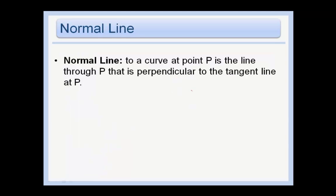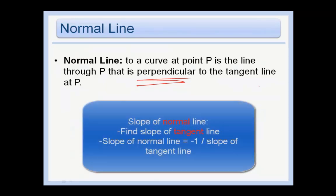Normal line to a curve at point P is the line through P that is perpendicular to the tangent line at P. So basically in order to find the slope of the normal line, we'll find the slope of the tangent line and then we'll take the negative reciprocal to find the slope of the normal line.